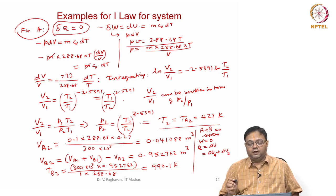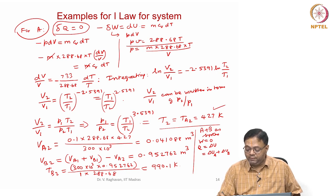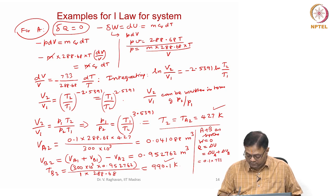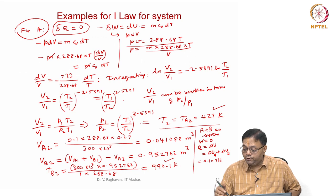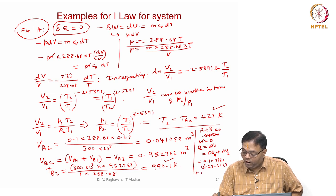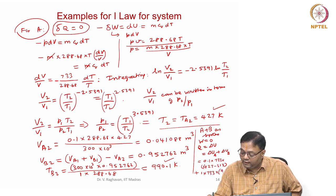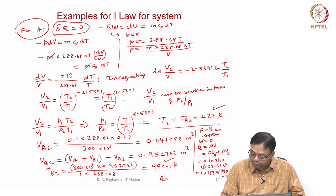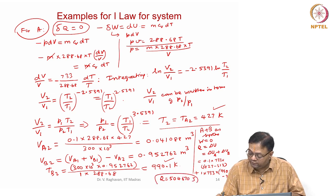Delta U = delta U for A + delta U for B. Initial temperature is 313 K for both; final temperature of A is 427 K, final temperature of B is 990.1 K. So: 0.1 × 733 × (427 − 313) + 1 × 733 × (990.1 − 313) = 504,670 joules. This is the heat added.